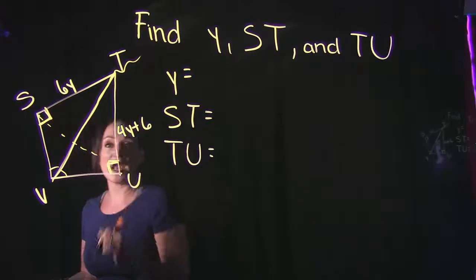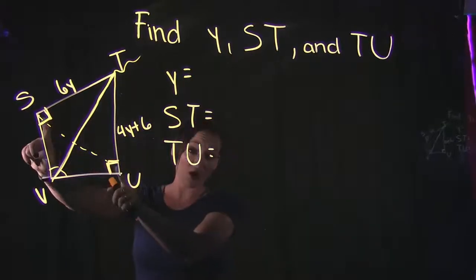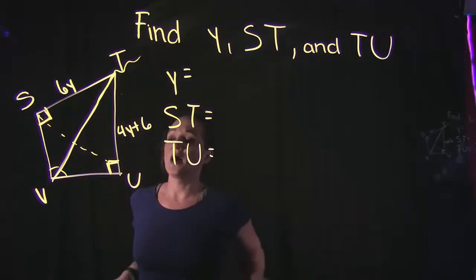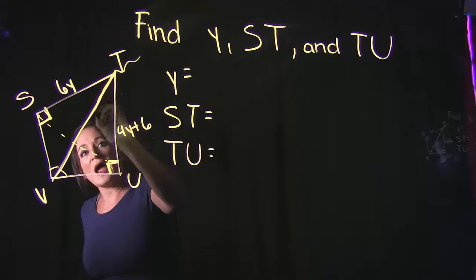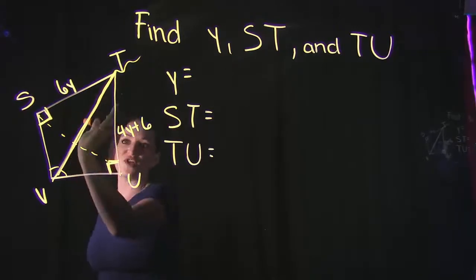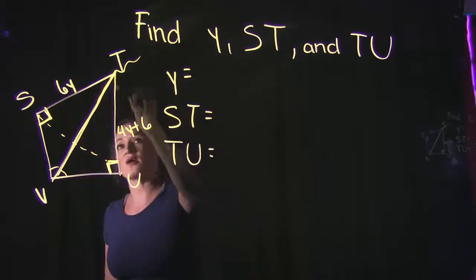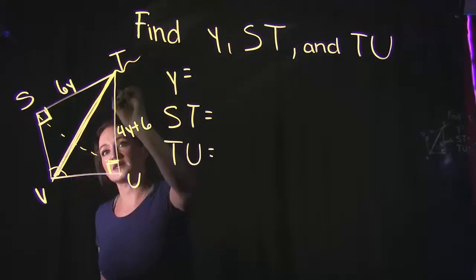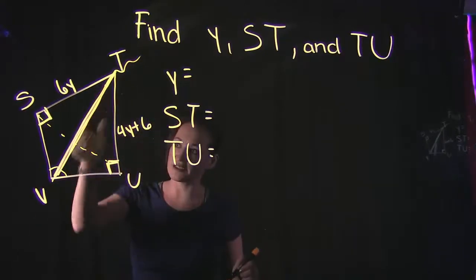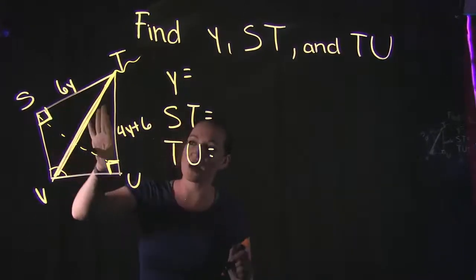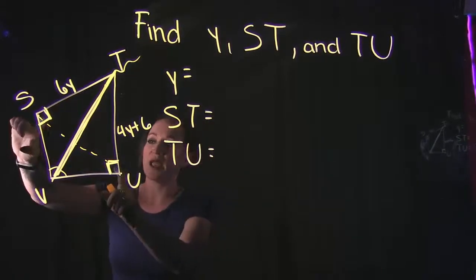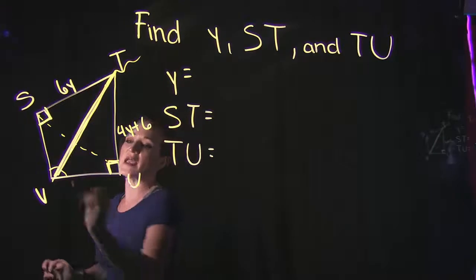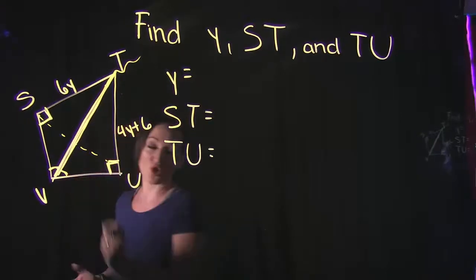I mean, we see that they both have a right angle over here, so they share a right angle or they have the same right angle in it. This line that cuts through, they both have that line for the triangle, right? So this line here goes for this triangle and it goes for this triangle as well.